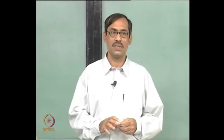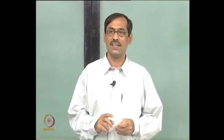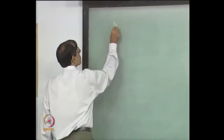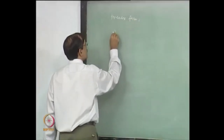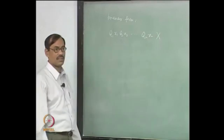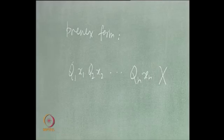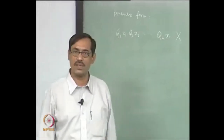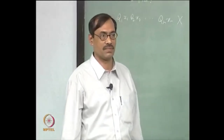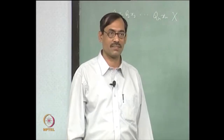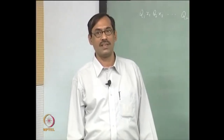There are two approaches here: preserving satisfiability or preserving validity. We will see both approaches, then stick to one, because they are dual to each other. Let us consider satisfiability. Suppose we have a formula in prenex form — it would look something like Q1 x1, Q2 x2, ..., Qn xn, and then some matrix of the formula which is quantifier-free. Now, there can be some free variables which have never been quantified. We want to preserve satisfiability, so our earlier theorem helps: we can convert to a sentence, because a formula is satisfiable if and only if its existential closure is satisfiable.